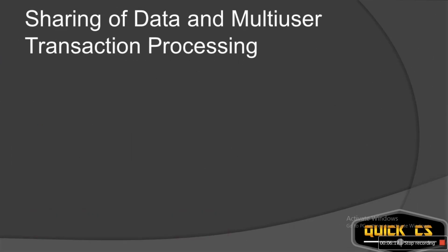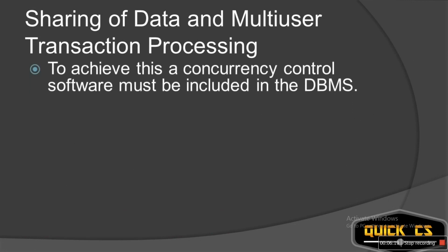To achieve this, a concurrency control software must be included. A concurrency control software will allow a user to access data at the same time, whereas other users will be able to use the database but not the same data. Once one user commits the changes, then only the other person can come and add new changes or edit it. This is known as concurrency control, and for this you have concurrency control softwares, also known as OLTP.